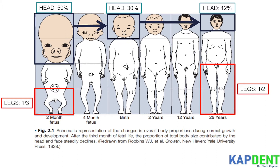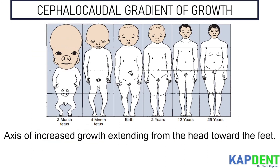Also note that at birth the legs represent about one third of the total body length, while in the adult they represent about half. There is also more growth of the lower limbs than the upper limbs during postnatal life. All of these changes, which are part of the normal growth pattern, reflect the cephalocaudal gradient of growth, which simply means there is an axis of increased growth extending from the head towards the feet.